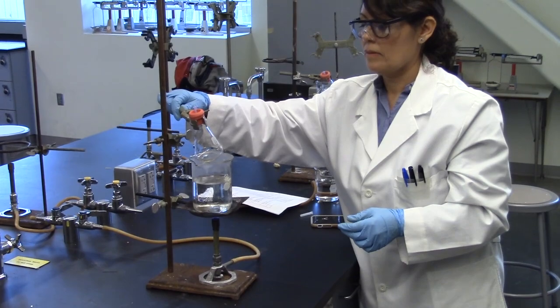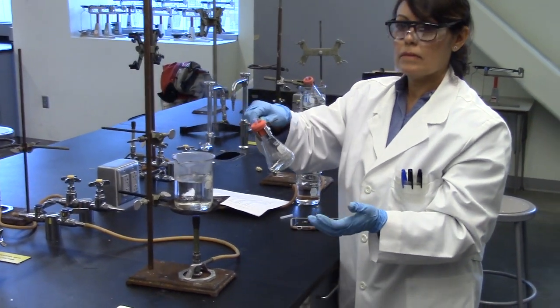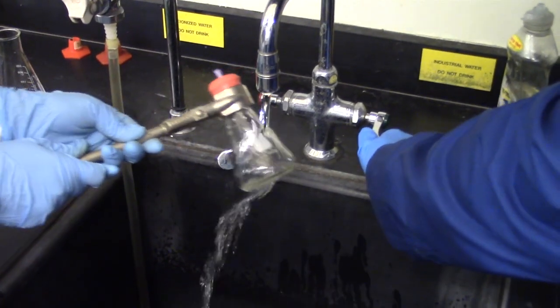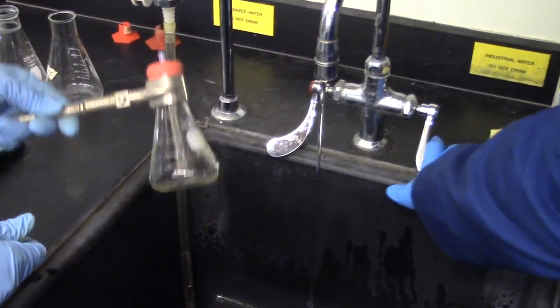Cool the flask under a stream of cool tap water to condense the vapor in the flask. The unknown will condense at a perceptible rate. Remove the capillary.